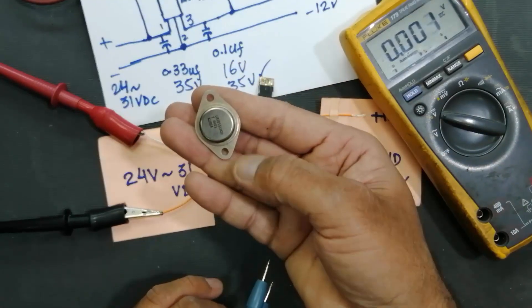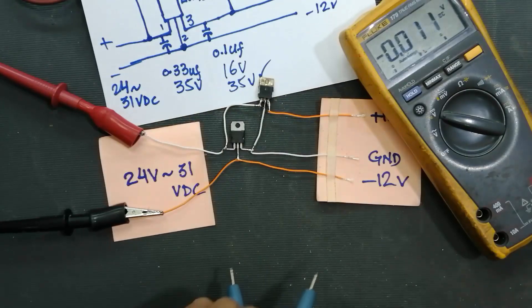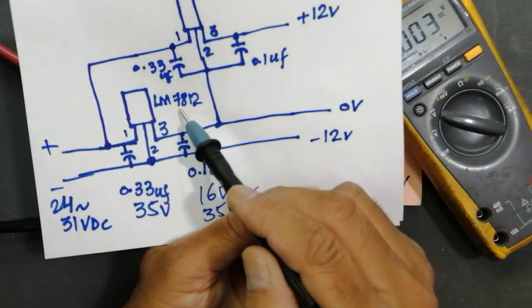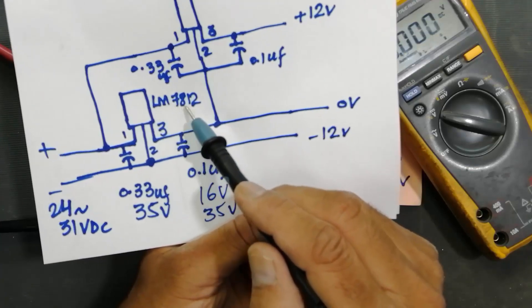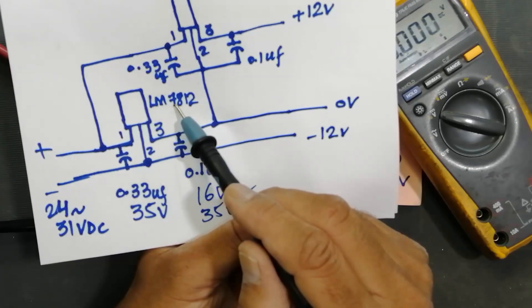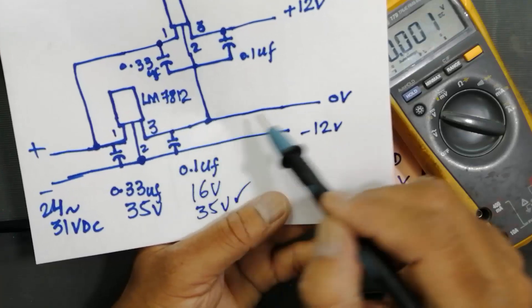It can be used in this shape or it can be used in this shape for more current. Now we will see the circuit. 7812 for example. If you want to use 15 volt you will use 7815. If you want to use 7809 you will take 9 volts.